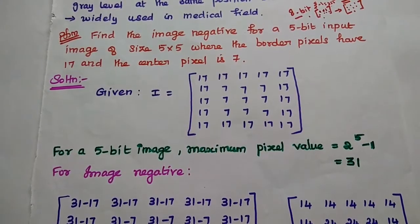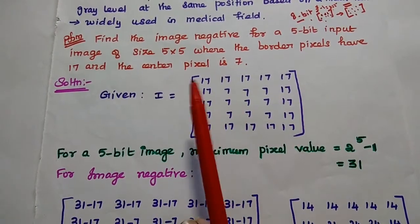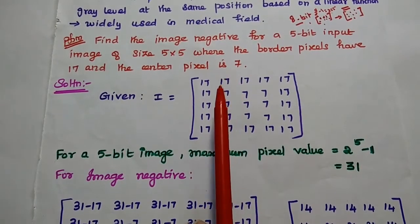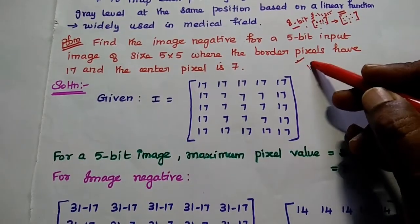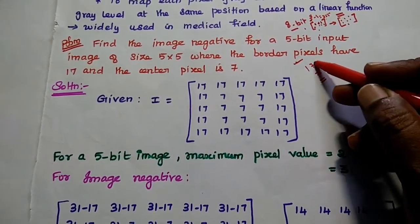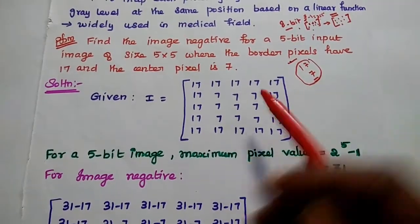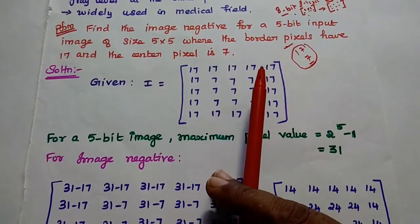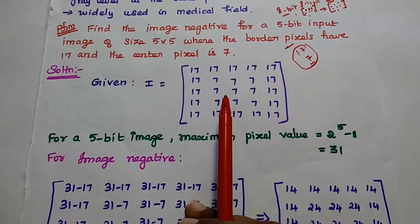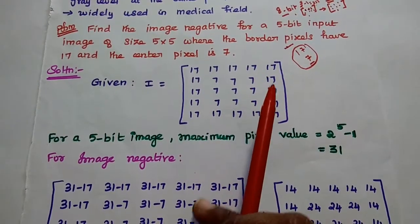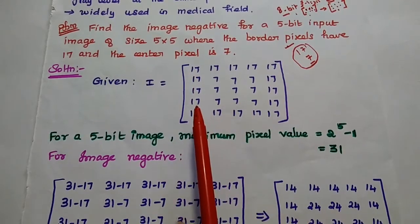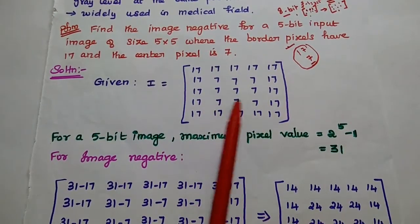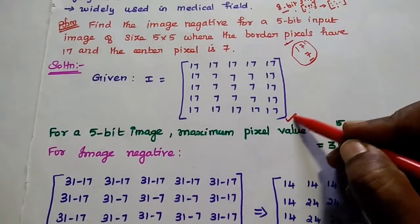First problem: find the image negative for a 5-bit input image of size 5x5, where the border pixels have value 17 and the center pixel is 7. From the problem, we are given only the pixel values — border is 17 and center pixel value is 7. Using these values, we can form the 5x5 image data. We take the value 17 in the border, meaning the first row, first column, last row, and last column are all 17, and the central pixels are 7.